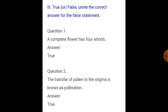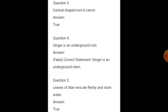Question number two: the transfer of pollen to the stigma is known as pollination — that is also true. Question number three: the conical shaped root is carrot — that is also true.